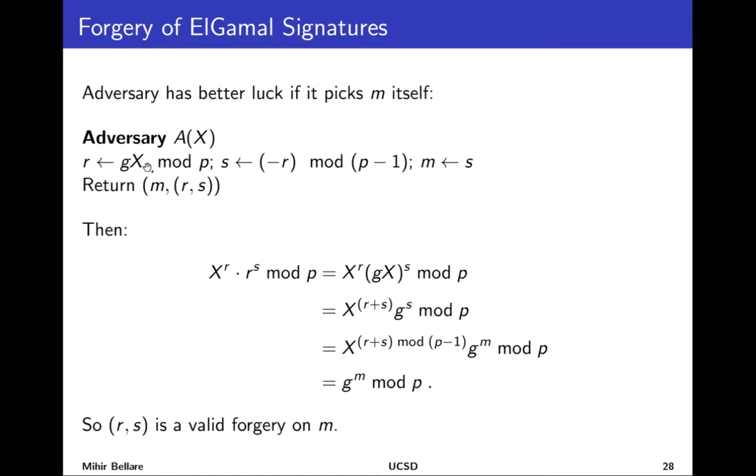So this is a UFCMA adversary written out formally. Remember its input is the output of the initialized procedure which is the public key. Now it first starts by creating the r component of the signature which is created by multiplying the generator by big X mod p. Remember the generator is public. It then takes the second component of the signature to be the negative of r and this is done in the exponent space. This is mod p minus 1. Finally it sets the message to also be this value s and so that's the triple it outputs.